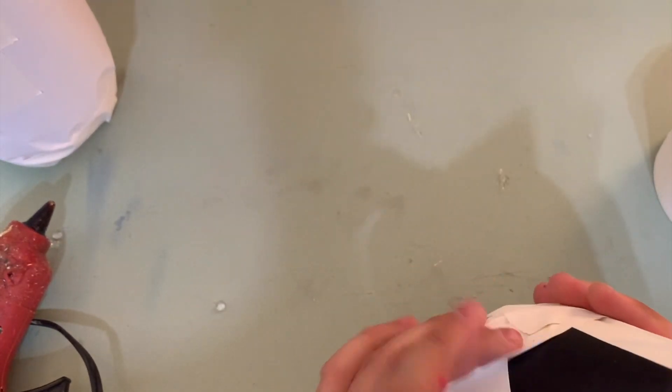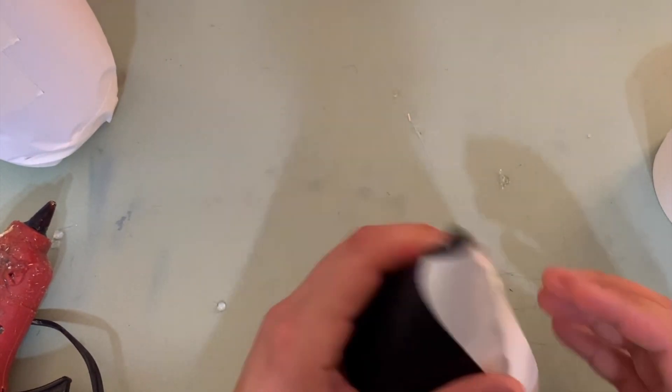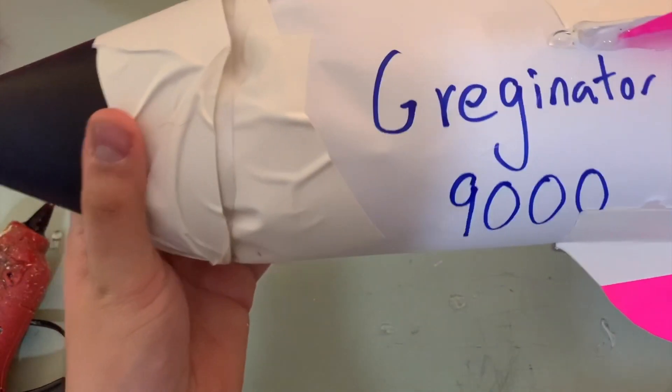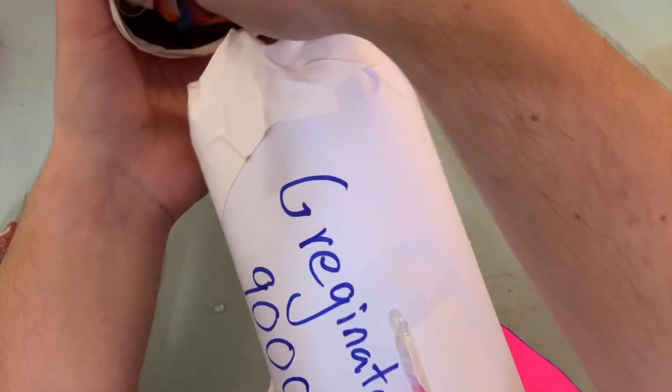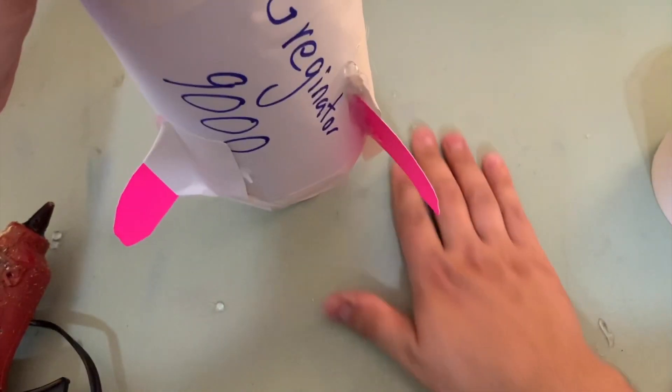Alright. You can decorate this a little bit. If you put some nicer paper on top, you know, you'll be good to go. Alright, but let's take a look. So we got our Greginator 9000, it's got a nose cone. We take our army man, put our army man on top, and we're good to go. Alright. Easy as that.